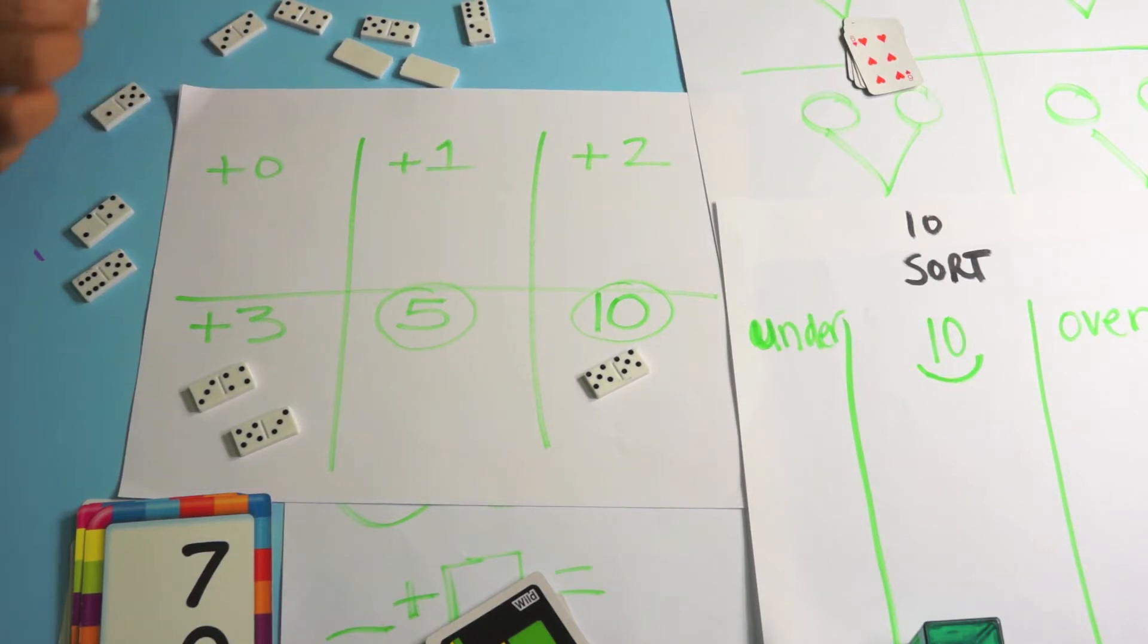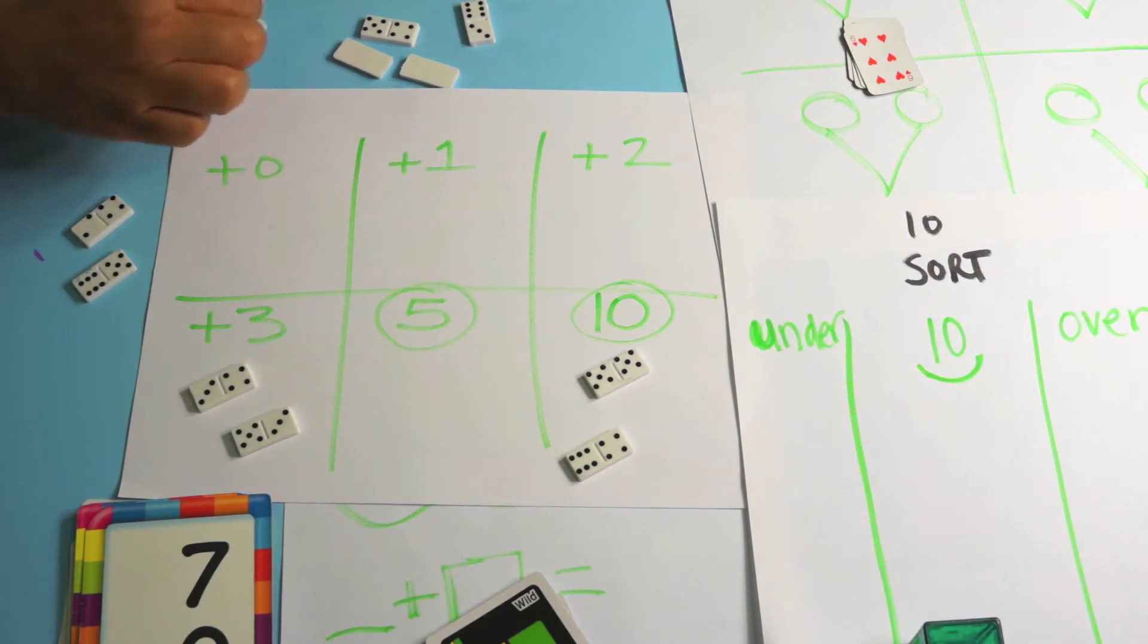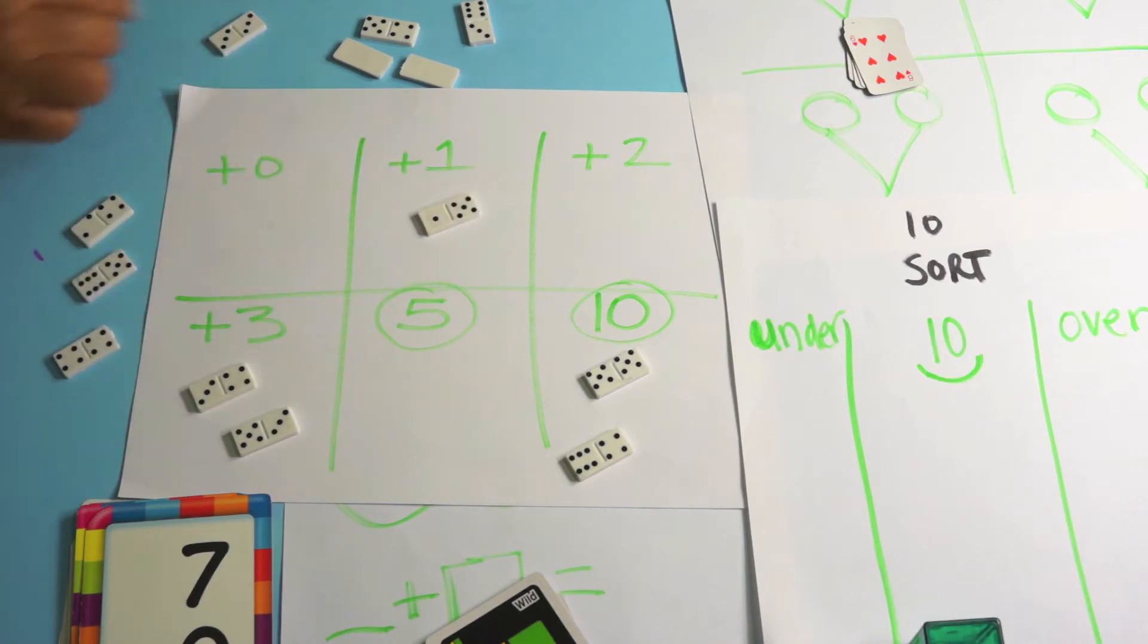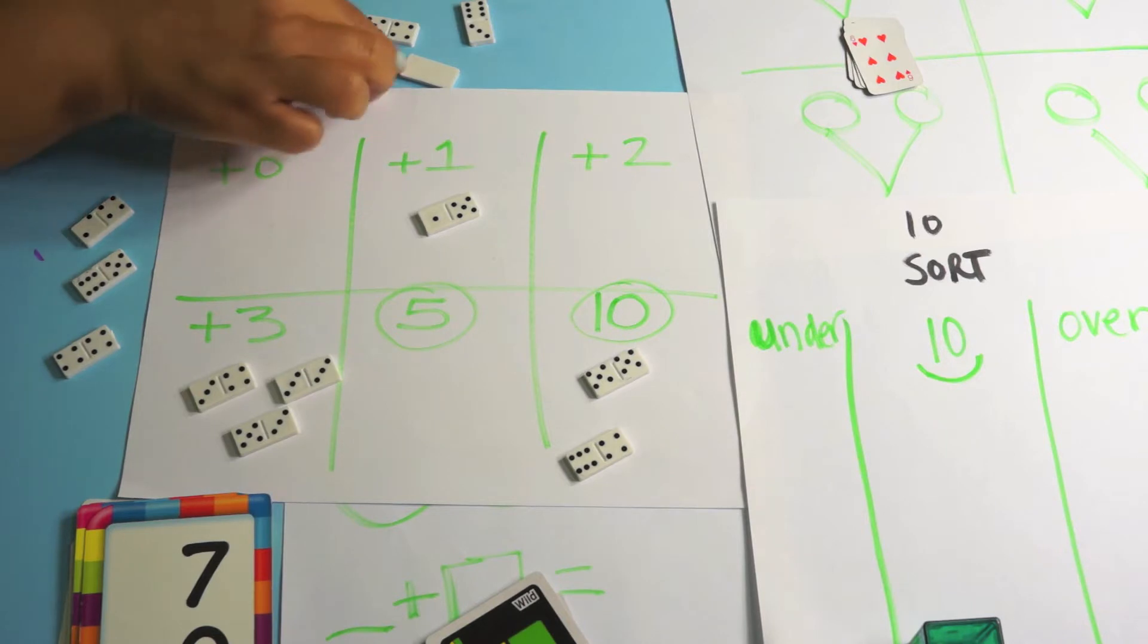And here is a make ten fact: six plus four. Here is, this is a four plus four so it can't go in the parking lot. Five plus one, this is a plus one fact. Five, one more is six. This is a plus three fact. It's also a doubles fact. So three plus three is six. It's a doubles fact but it's also a plus three fact. I could just count on three, four, five, six.